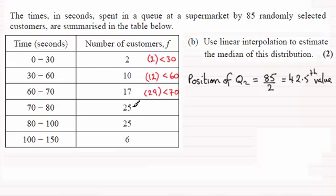And then if I add 29 with the 25, we've got 54 values which are less than 80. And I can see that the 42.5th value must occur in this interval, 70 to 80.